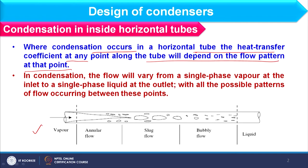In horizontal condensers the heat transfer coefficient depends on the flow pattern inside the tube. When vapor enters the tube it is in pure vapor form. When it contacts the cooler surface, condensate starts forming on that surface. As we proceed further, the condensate film thickness keeps increasing. This section is called annular flow because at the periphery of the tube we have a condensate film and at the center we have vapor, forming a kind of annulus.